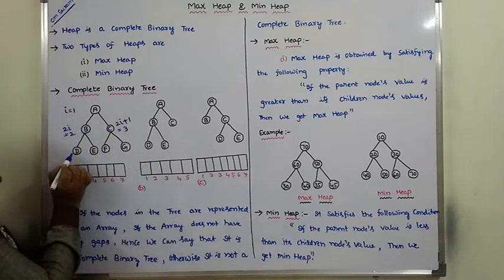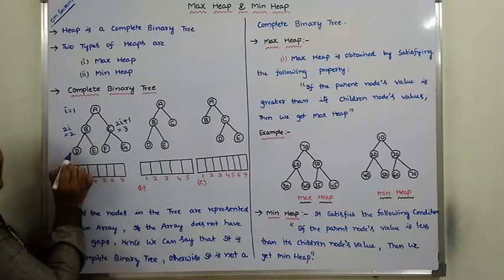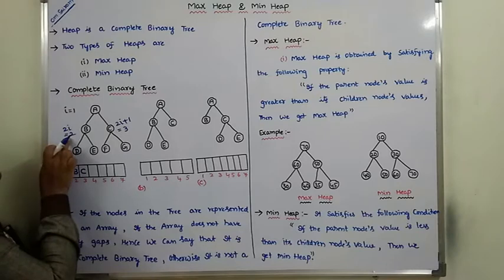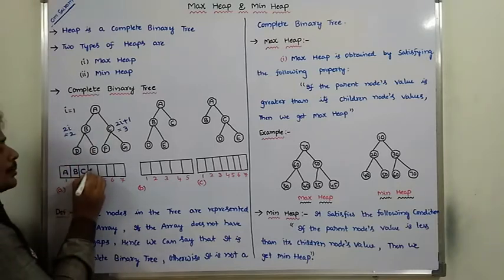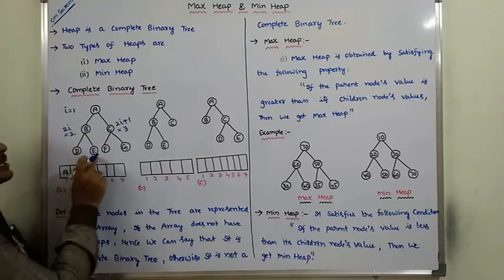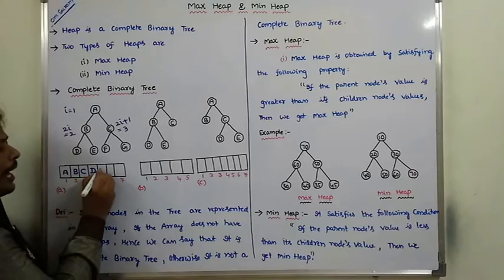B's left child is D. The left child is located at 2i position, where i value is 2. 2 into 2 equals 4, so D is located at index 4. B's right child is E, located at 2i plus 1. 2i plus 1 means i value is 2, so 2 into 2 plus 1 equals 5.